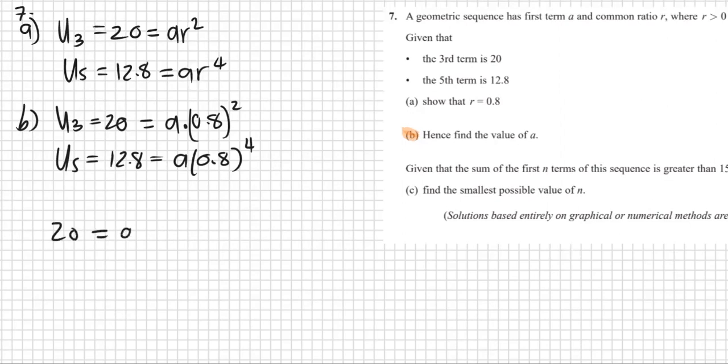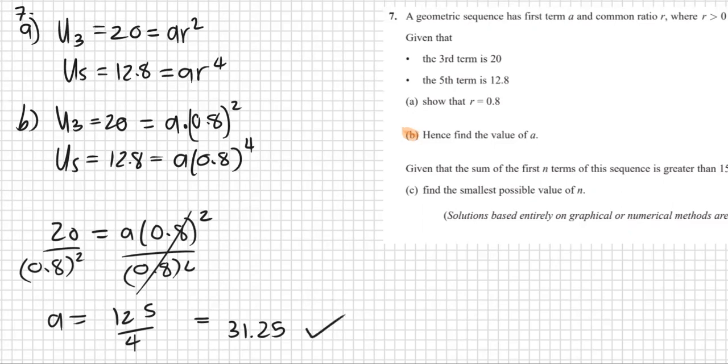Let's use u_3. We know that 20 equals a times 0.8 to the power of 2. We can divide both sides by 0.8 squared, so a equals 20 over 0.8 squared, which is 125 divided by 4, and in decimal form that's 31.25.